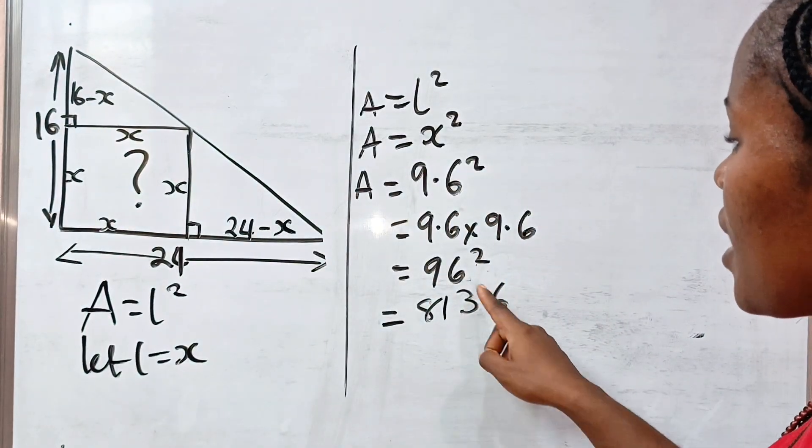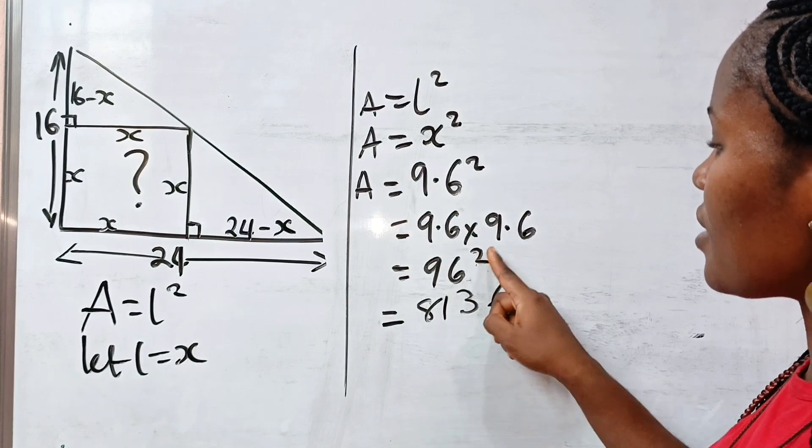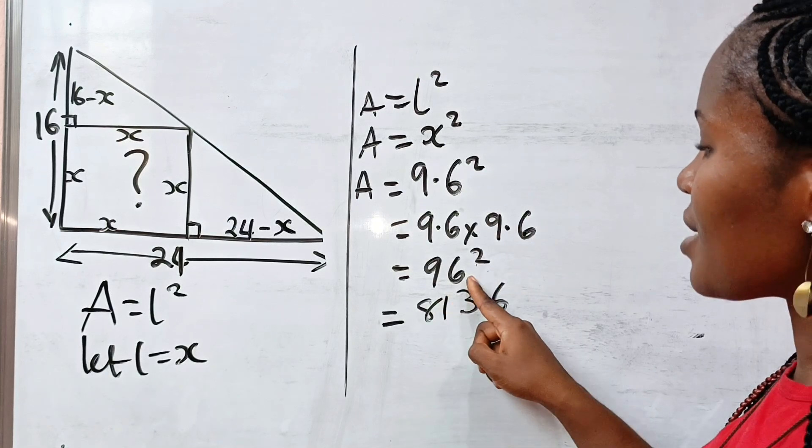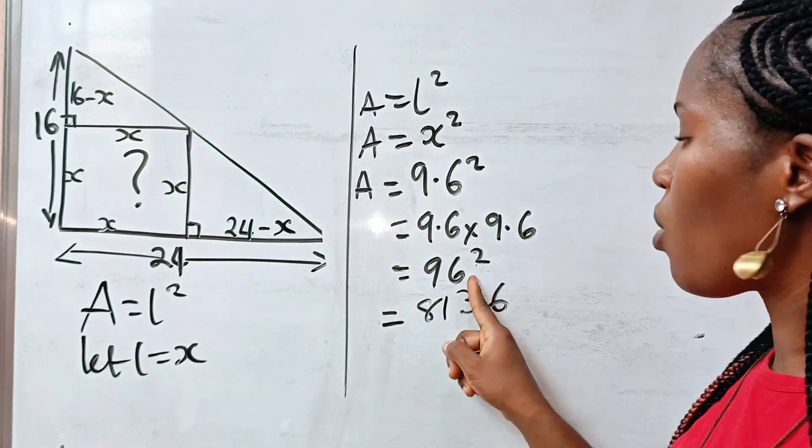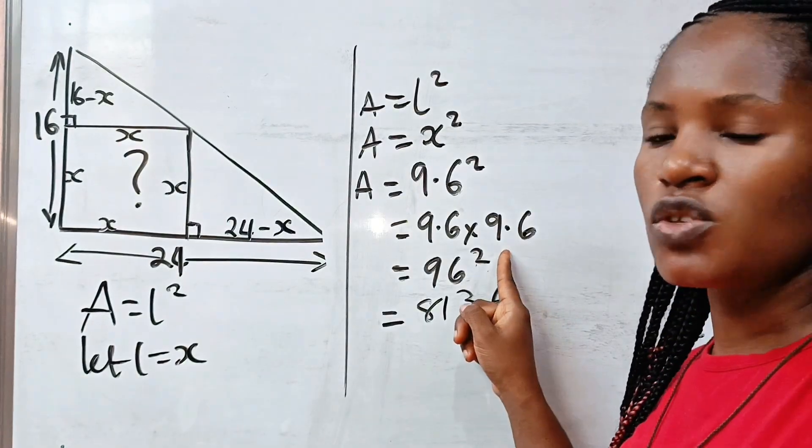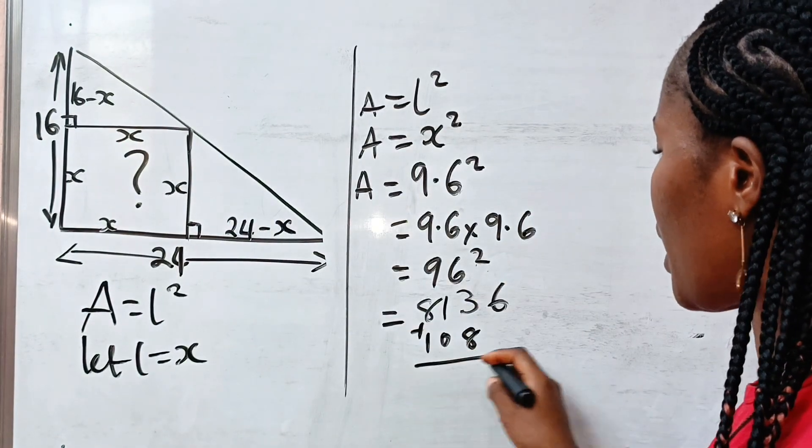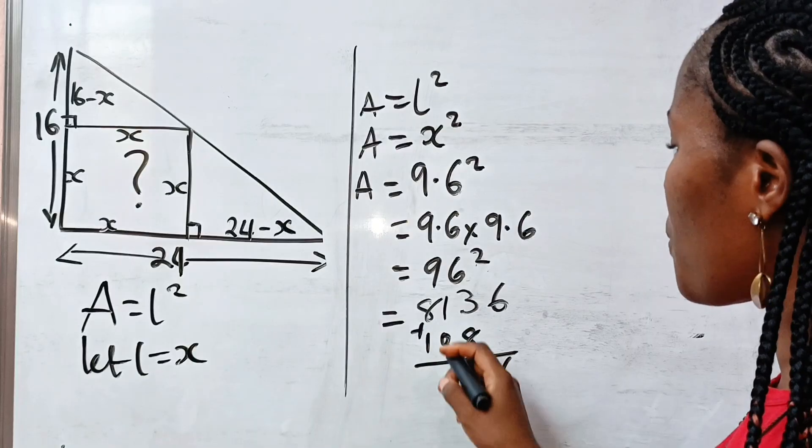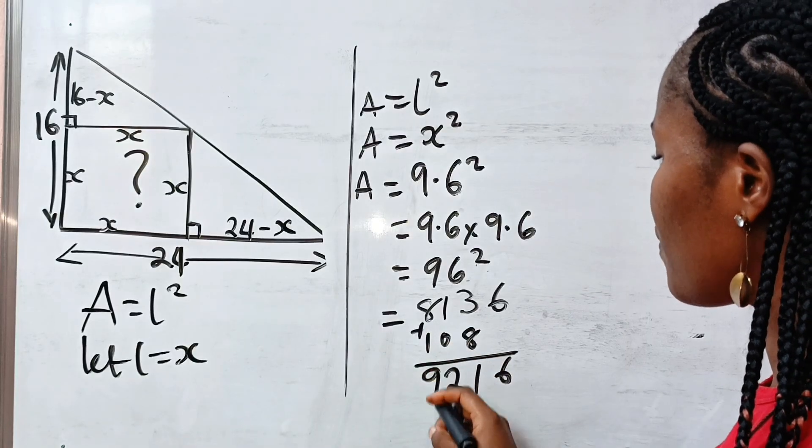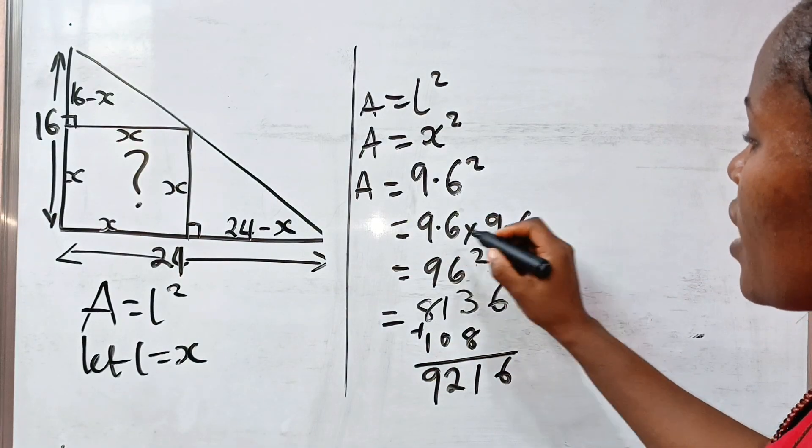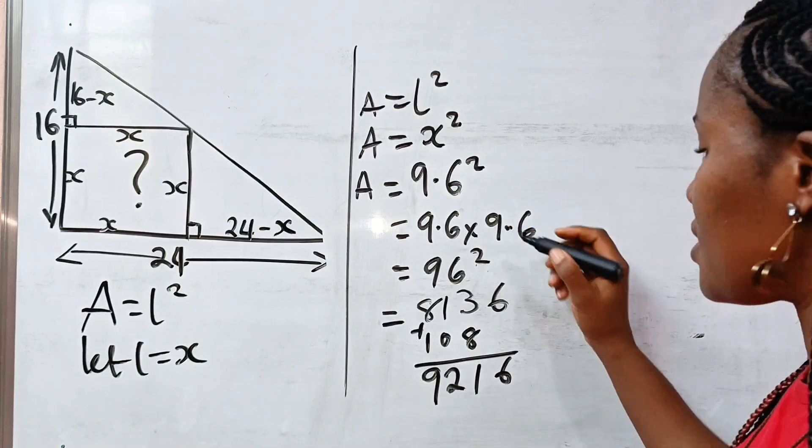So we have 8, 1, 3, 6. That is 6 squared is 36, 9 squared is 81. Now, 9 times 6 is 54, 54 times 2 is 108. So we add 8 here. We have 6, 11 carry 1, we have 2, we have 9.